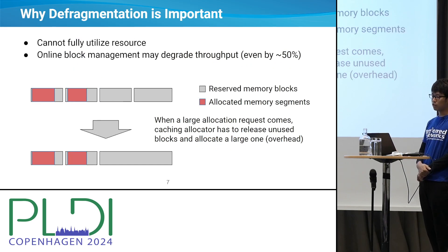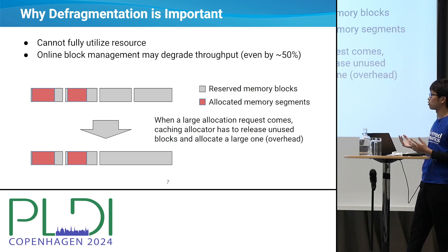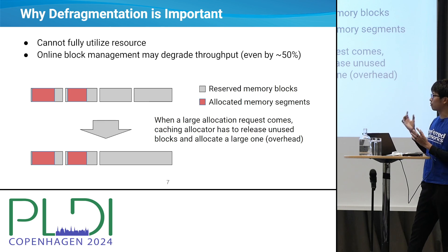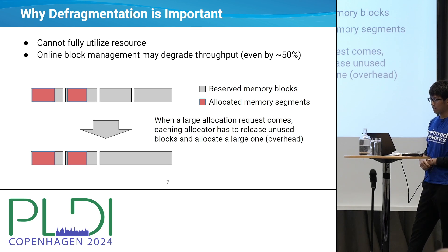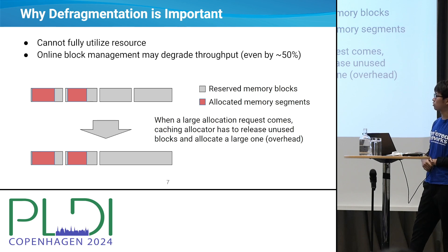So why is defragmentation important? We cannot fully utilize the resource. PyTorch caching allocator provides some methods to cope with this problem by managing cache blocks in an online way. However, when doing this kind of online management, it involves many calls of CUDA malloc or CUDA free during runtime, and it decreases training throughput, sometimes even by 50%.